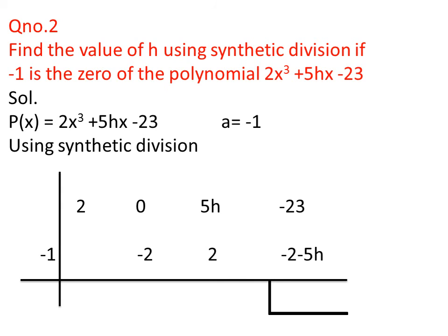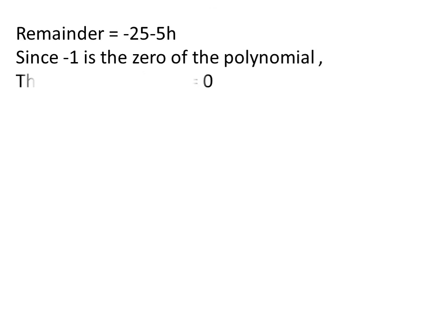We write the first number, 2, under the horizontal line. The product of 2 and -1 is -2; we write -2 under 0 and adding gives -2. The product of -2 and -1 is 2; we write 2 under 5h and adding gives 2 + 5h. The product of (2 + 5h) and -1 is -2 - 5h; we write this under -23 and adding gives -23 + (-2 - 5h) = -25 - 5h. Since -25 - 5h is the last term, it is the remainder.